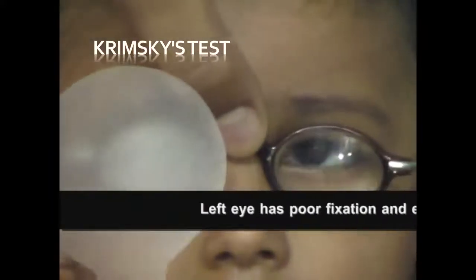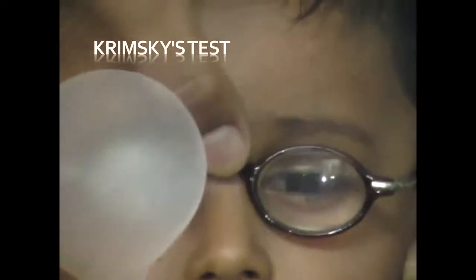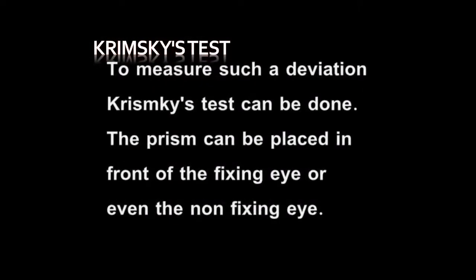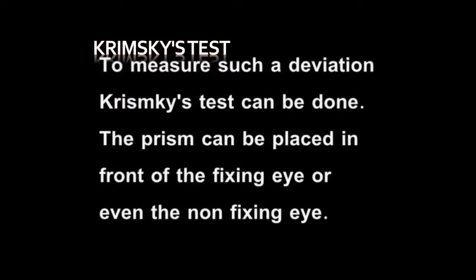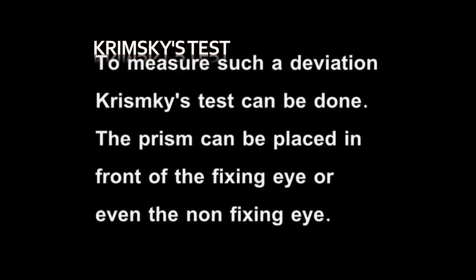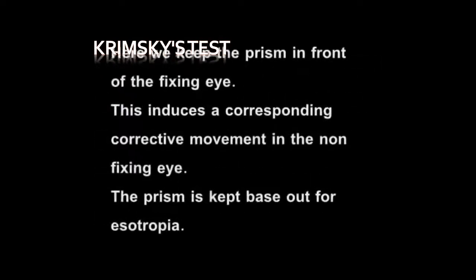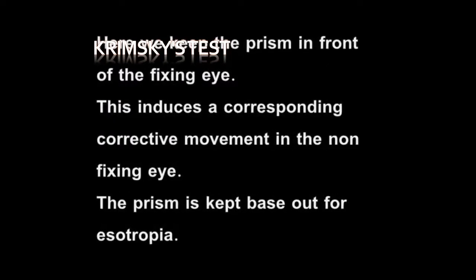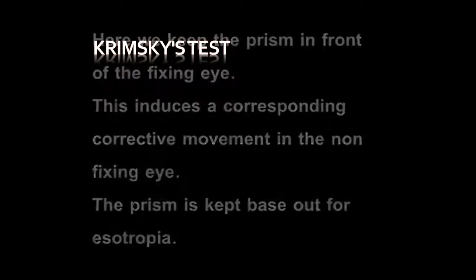The patient has esotropia; we did cycloplegic refraction and gave him the maximum amount of glasses, which is 6.5. Despite giving 6.5, he still has some esotropia remaining — that is partially accommodative, because partly it has been treated with glasses and some part is still remaining. We will do a modified Krimski by keeping prisms in front of the right eye, because we want to measure his left eye. We keep prisms in front of his fixing eye — the right eye — and once we put prisms in front of the right eye, it induces a corresponding corrective movement in the non-fixing eye, which is much easier to judge.